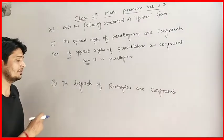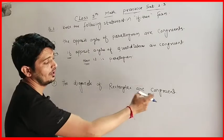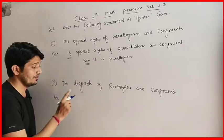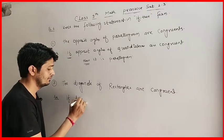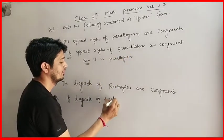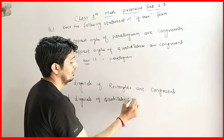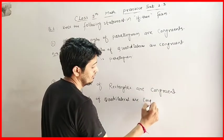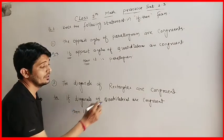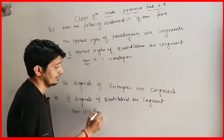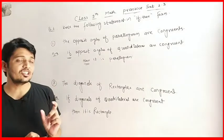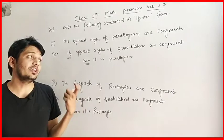The next example says: the diagonals of rectangles are congruent. We convert this into conditional statement form: if the diagonals of a quadrilateral are congruent, then it is a rectangle. This is how we convert a given statement into a conditional statement, that is, the if-then form. Now we will see the next question.